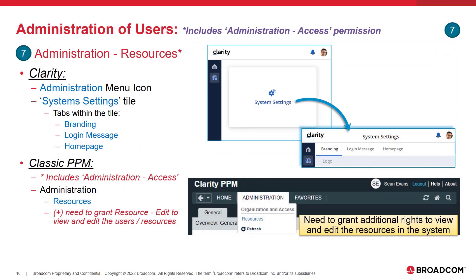The administration resources right includes the administration access permission, which allows the user to access Clarity's administration menu and to manage the system settings. From within Classic PPM, this right only provides the navigation into the Classic PPM Administration resources page. The admin won't see any resources unless they have also been permitted to view and edit the users through the resources edit right. Granting the combination of the administration resources and resources edit rights will provide the administrator with permissions to edit all or a subset of users because the resources edit right can be granted through global, OBS, or instance level.